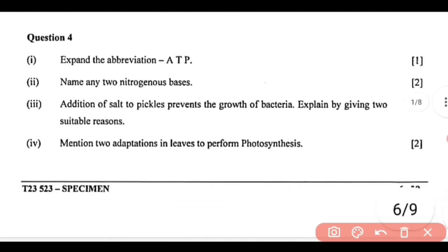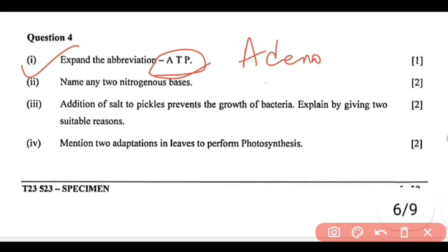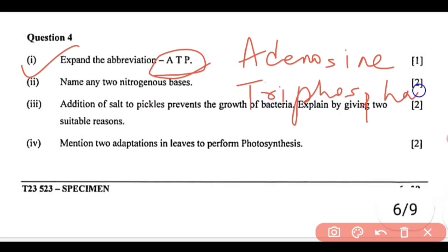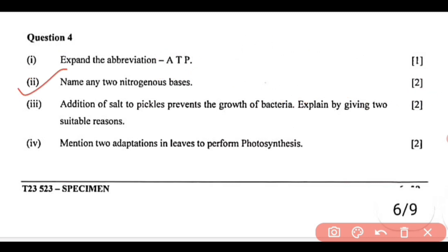Next is question number 4: you need to expand the abbreviation ATP. What is the full form of ATP? Adenosine triphosphate — be careful with the spelling, it is adenosine triphosphate. Next, question number 2: you need to name any two nitrogenous bases. The nitrogenous bases are adenine, guanine, cytosine, and thymine — you can name any two.